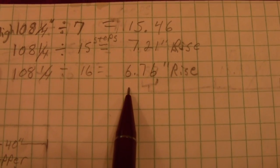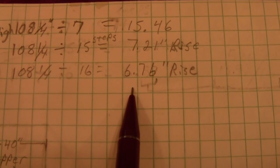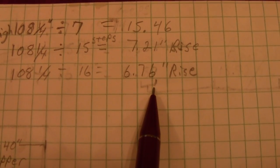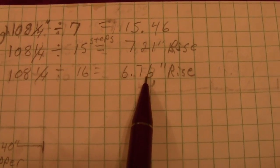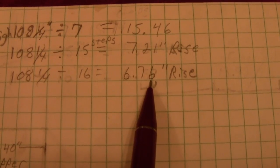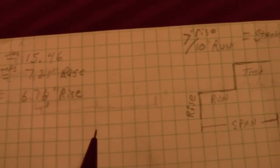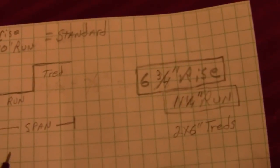That gives me a rise of 6 and almost 3 quarters inch. Well, a little greater than 3 quarters inch, but that's so close, I can just round it down to 6 and 3 quarters, which is what I'm going to do for my rise.